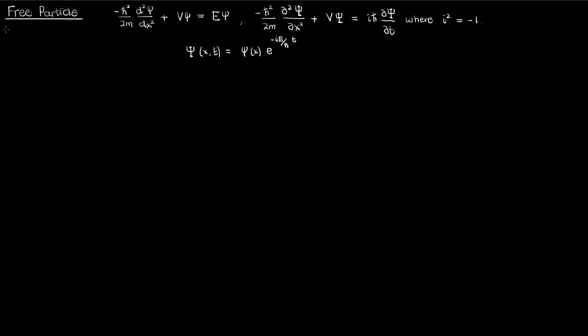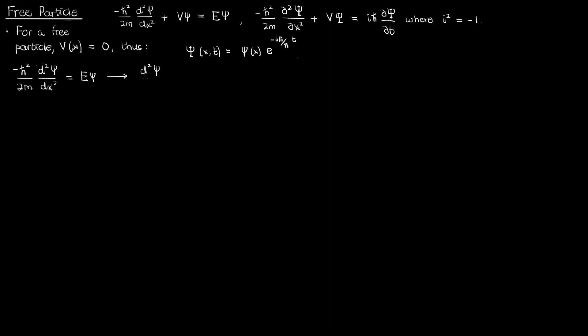So with these facts out of the way, let's talk about the free particle. The free particle is exactly as the name implies — free. There's no potential that holds the particle back; the particle is completely free, which means that the potential is zero. As a result, the time-independent Schrödinger equation simplifies to the following when there's zero potential. If I now move the coefficient of the second derivative to the right-hand side, this is what I get.